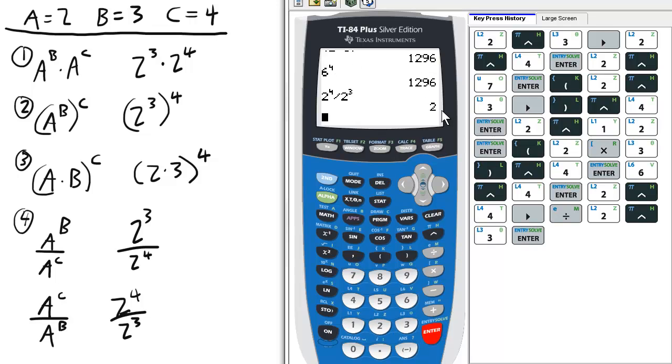So that's 2, which is equivalent to 2 to the 1st. So when we divide like bases, we subtract the exponents, because 4 minus 3 is 1, and 2 to the 1 is 2.